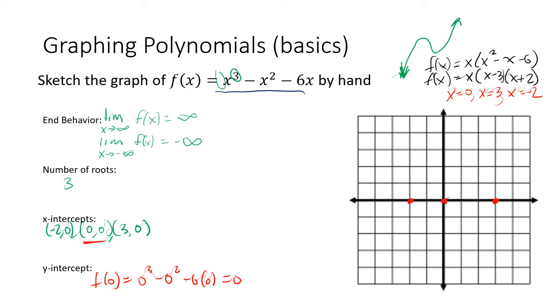If we're just asked to sketch, this is basically what the graph looks like. It starts down toward the bottom left — that's what our end behavior says. It crosses the x-axis at -2, comes back and crosses at 0, then crosses again at x = 3, and goes up forever. Obviously there's more to it: how high up does it go and how low does it go? The relative maximums and minimums — the turning points — are something to address later using a calculator.